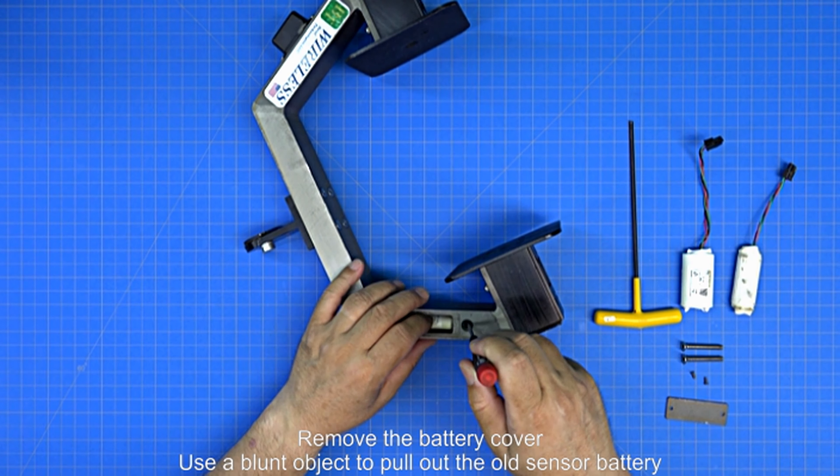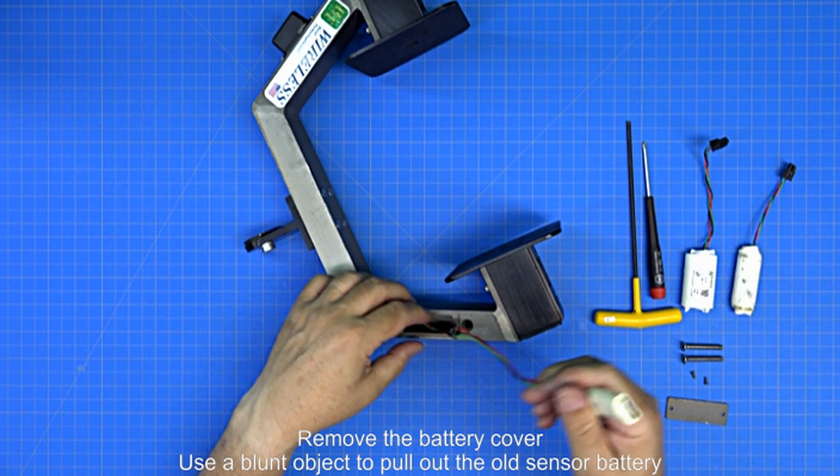Remove the battery cover. Use a blunt object to pull out the old sensor battery.